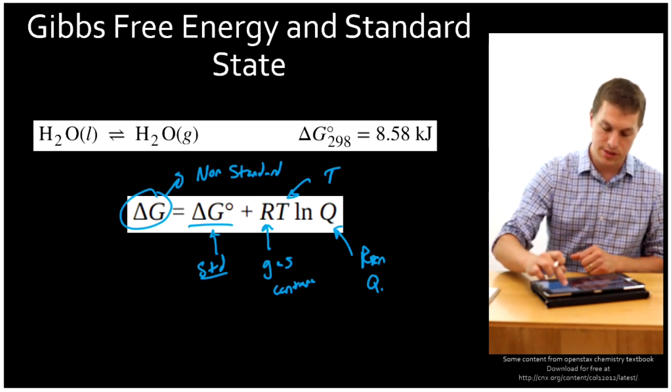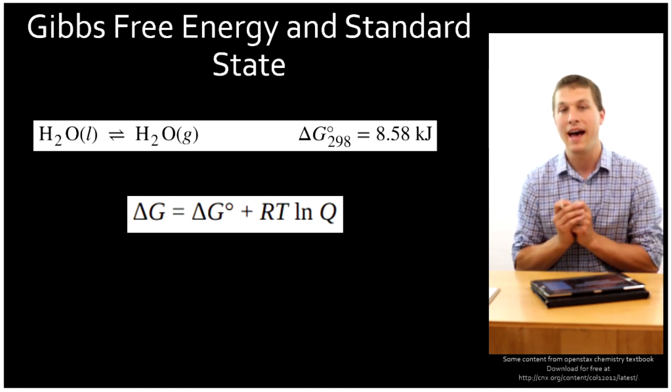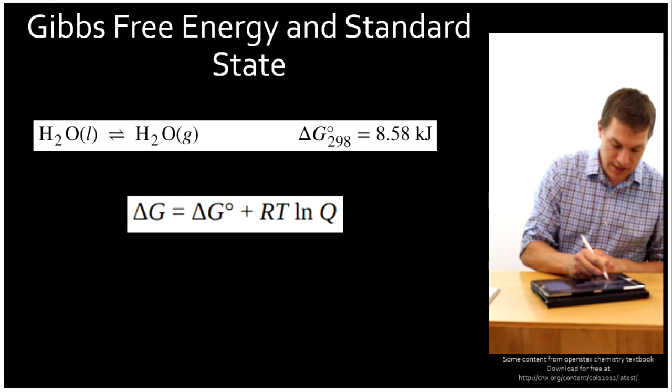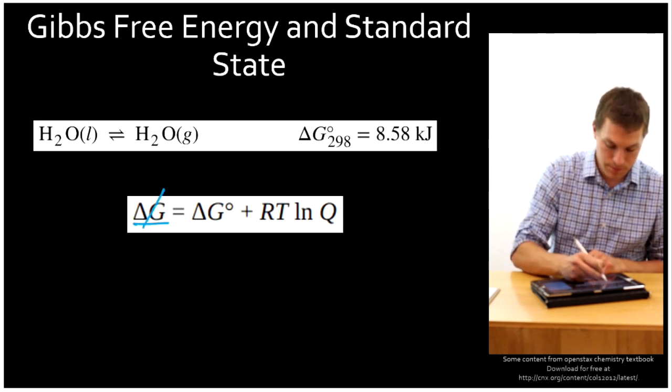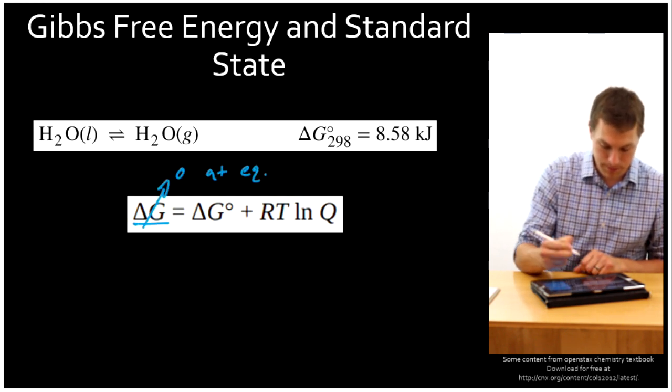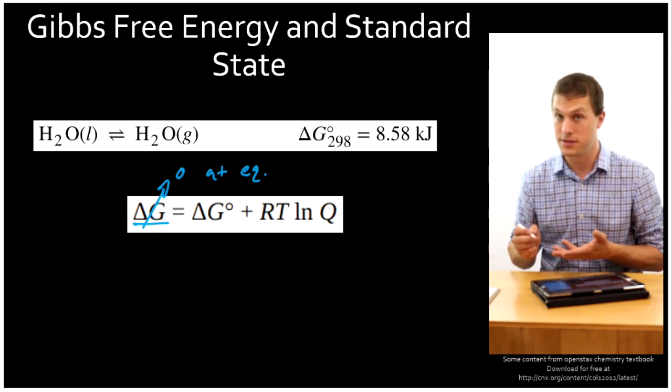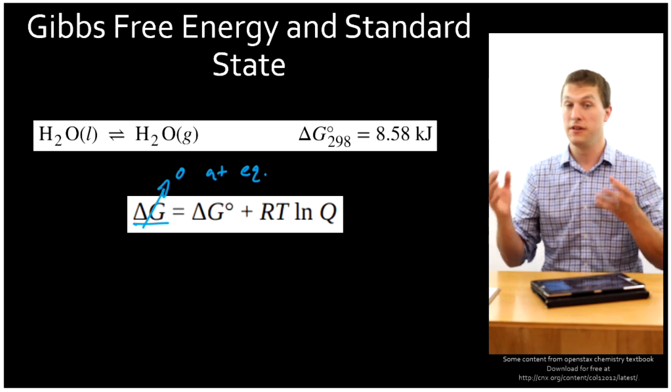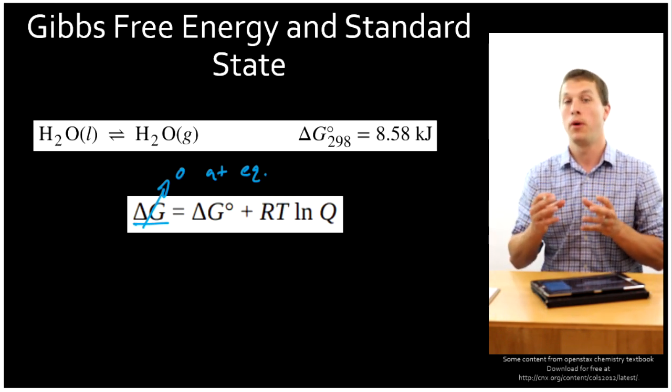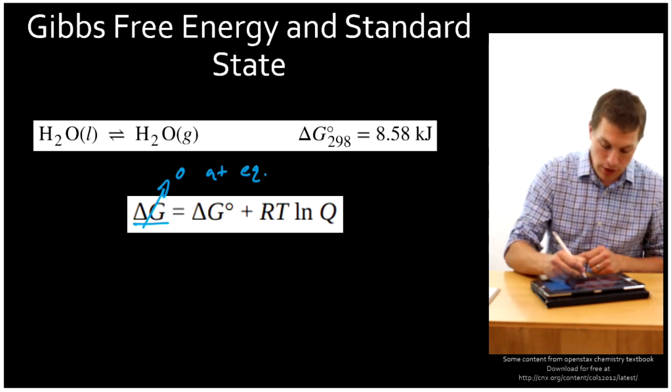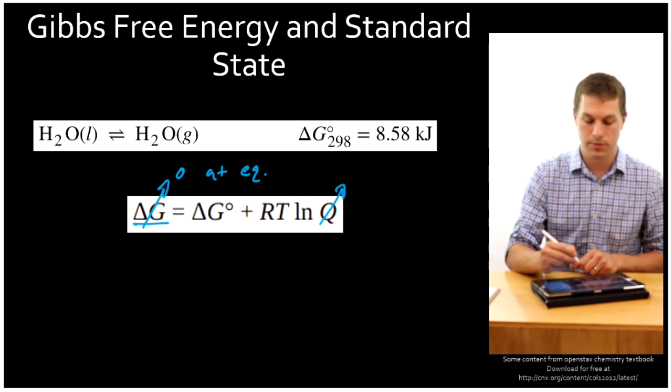But there's one other thing this equation does for us. And that is, if we are at equilibrium, then we know that delta G is zero. So it's zero at equilibrium. Delta G at standard state is whatever it happens to be if you put it at one bar of pressure, one molar and 298 Kelvin. So it's not necessarily zero at equilibrium. And Q, if we're at equilibrium, becomes K.